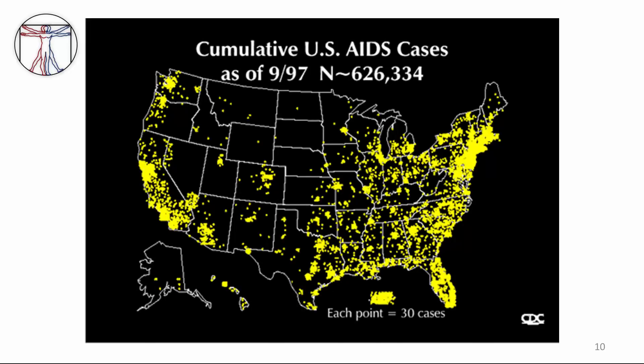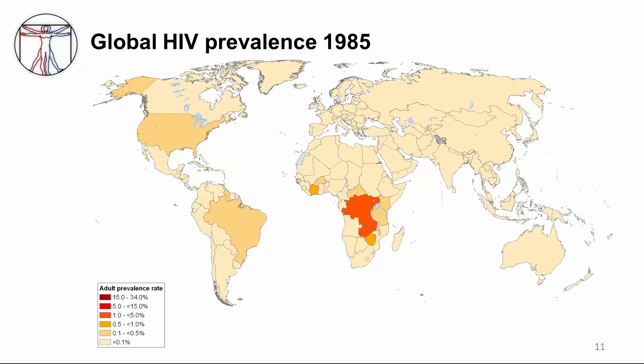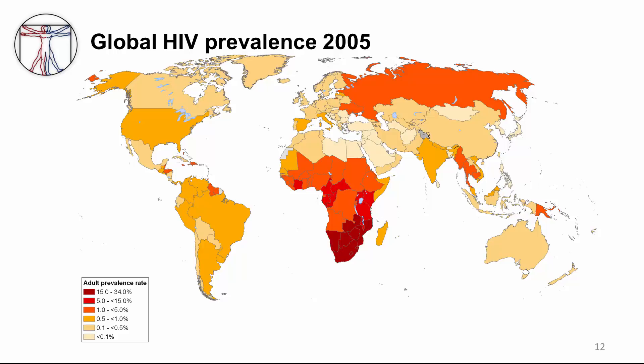By 1997, there were more than 600,000 U.S. cases reported. By the end of 2011, CDC estimates 1.1 million people are living with HIV in the U.S. About 50,000 new infections occur each year. Most of the cases in the U.S. are men who have sex with men. More than 600,000 people have died with AIDS in the U.S. In 1985, what we knew about the epidemic showed mainly disease in sub-Saharan Africa, North and South America. By 2005, the epidemic had spread globally, and by 2011 it is estimated that 34 million people worldwide are infected. Two-thirds of them live in sub-Saharan Africa. Africa, Asia, and South America currently have the highest HIV incidence.